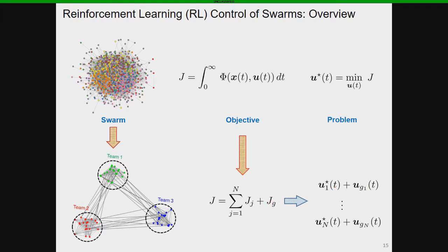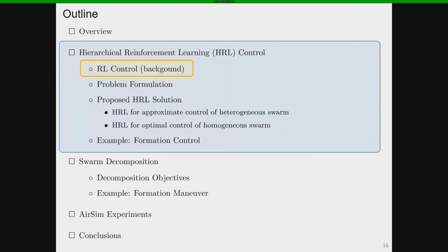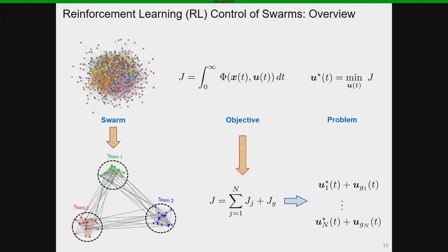If you take one thing away from this talk, it should be this: reinforcement learning provides a way to optimally control uncertain dynamic systems, and to apply it optimally to control a swarm, we take the approach of divide and conquer. We divide the swarm into smaller teams, and each team constructs their own local optimal controllers, while jointly synthesizing corrections to these local controllers to account for the global objective.